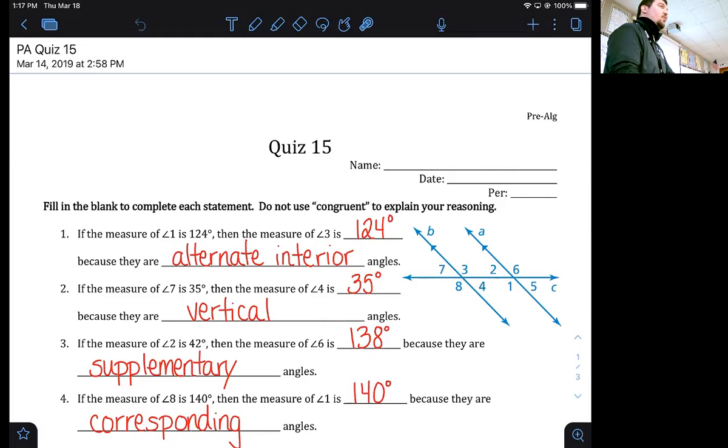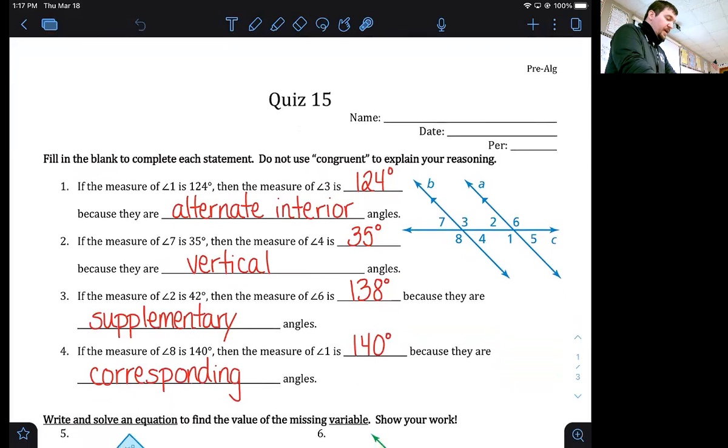Vertical angles are congruent. Vertical angles are always opposite or across from each other. You don't need three lines to have a set of vertical angles, all you need is two lines that cross because the vertical angles are always just right across from each other and they're congruent. So 35 degrees for the measure of angle four.